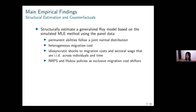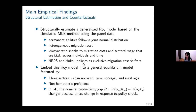Moving to the structural estimation, we extend the model by incorporating more heterogeneity — for example, allowing workers to have different migration costs and introducing idiosyncratic shocks to sectoral wages. For identification, we use the NRPS and other hukou policies as exogenous cost shifters to the migration cost, while these policies have no direct effect on earnings. We embed this Roy model into a general equilibrium model featuring three sectors and non-homothetic preferences. In general equilibrium, the nominal underlying productivity gap changes across policy environments because the relative price of agricultural goods responds to different policy shocks.